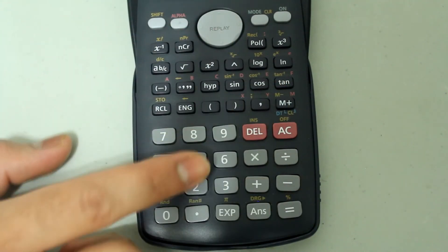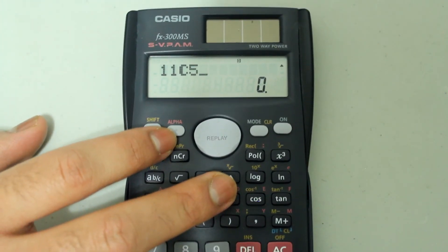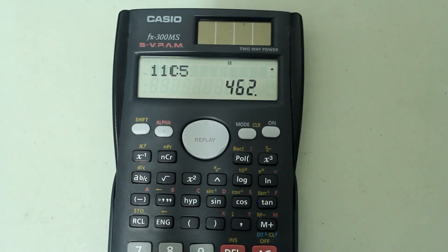Now just type in the r value, which is 5. So the entry looks like this so far and press equals. And there we have the answer.